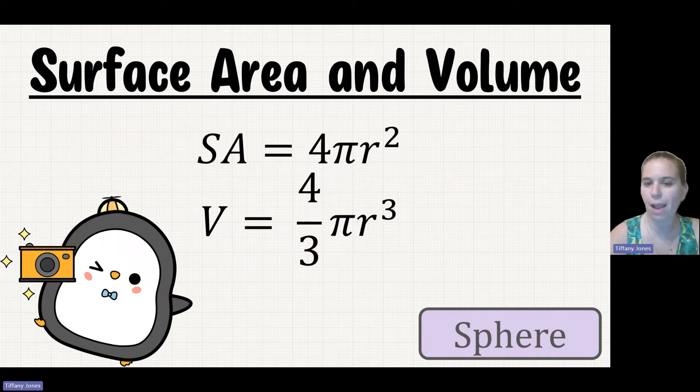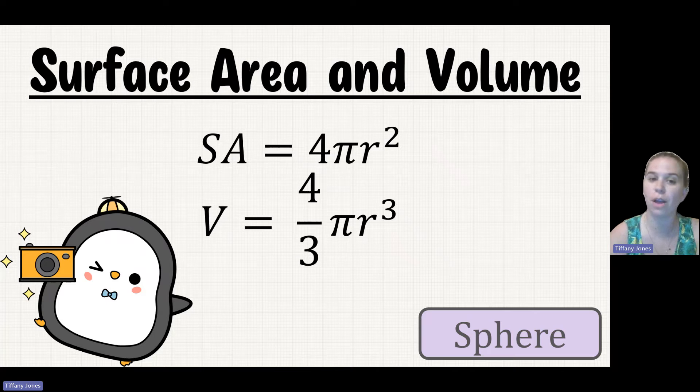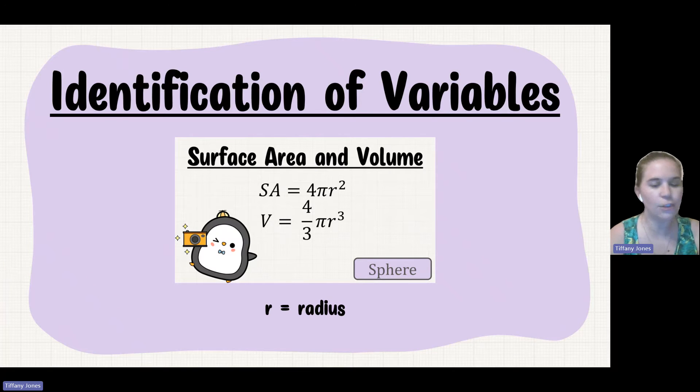So the formula is going to be 4πr² for our surface area and 4/3πr³ for our volume. So the r just stands for radius.